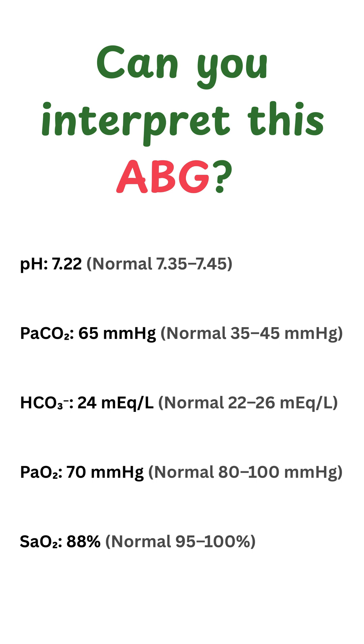The first step is to look at the pH. The pH here is 7.22, which is lower than normal. This means we have acidemia.